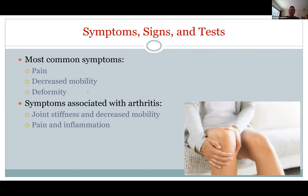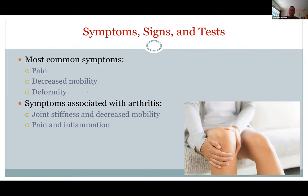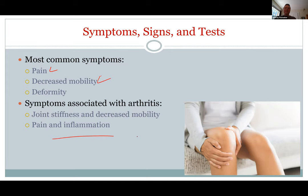Signs and symptoms — usually a person comes in holding their arm. With a bone break, you have pain, decreased mobility, and you can sometimes see the deformity. If your hand is bent the wrong way, you automatically know it's a bone break. With arthritis, again, you have pain, inflammation, stiffness, and lack of mobility, as you can imagine in a person with arthritis.